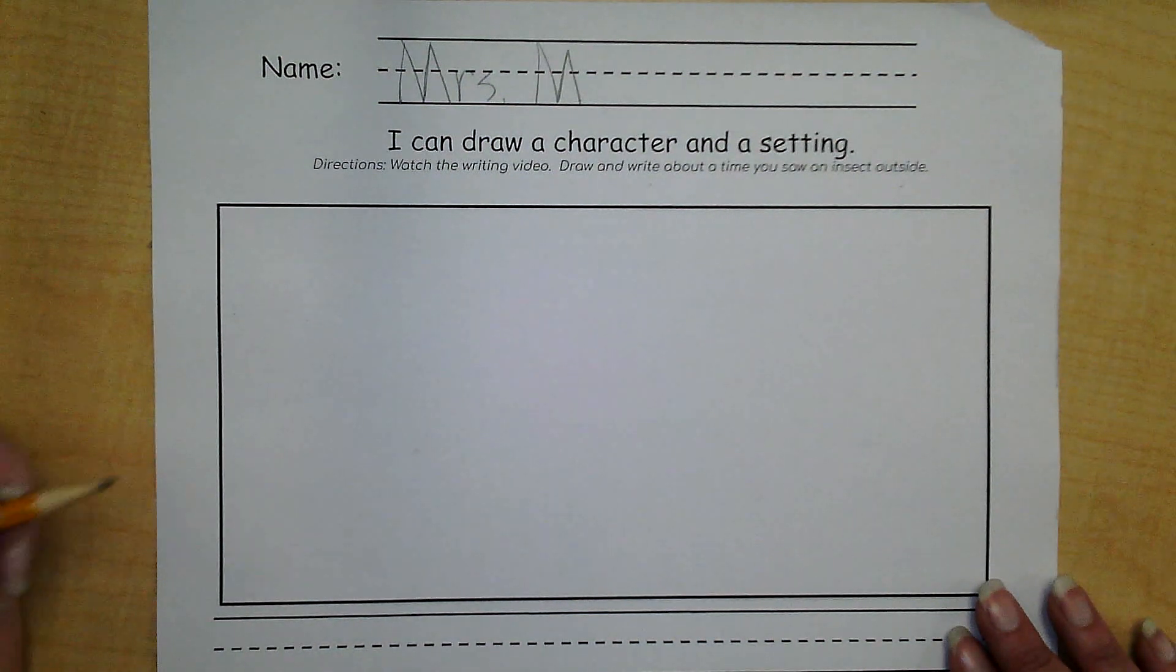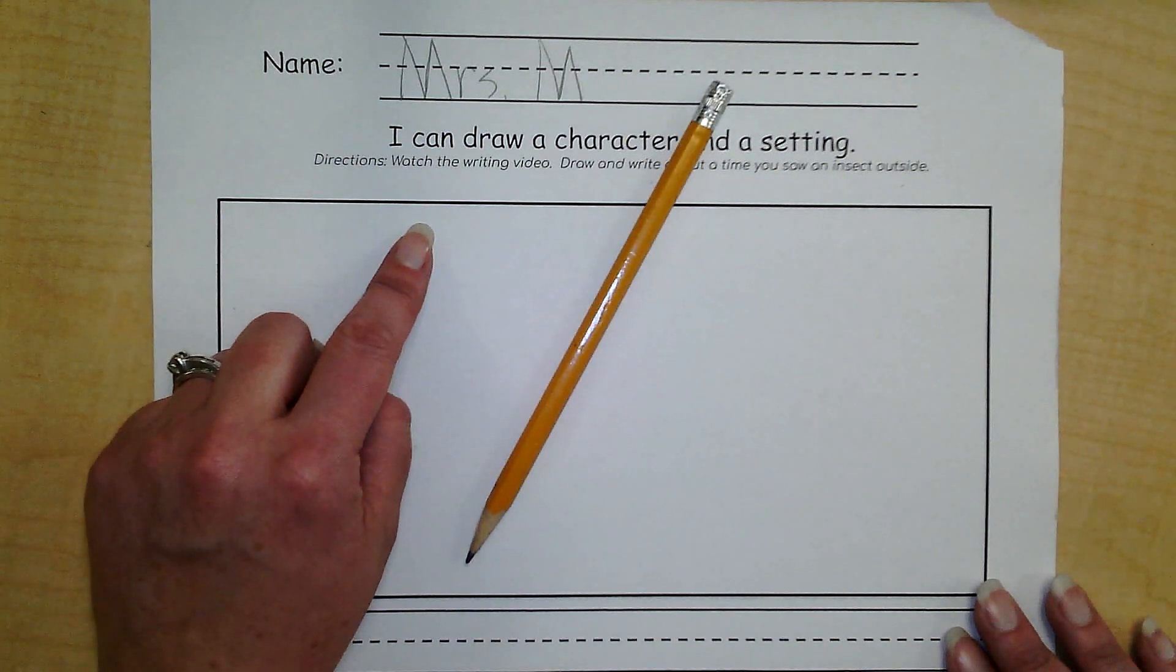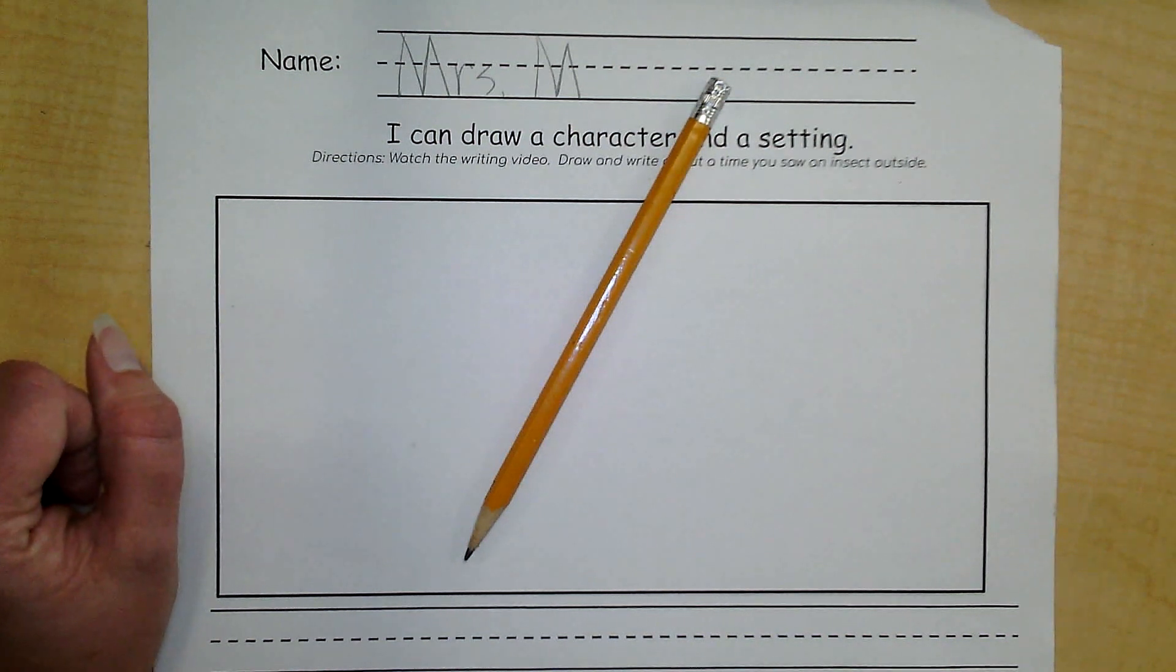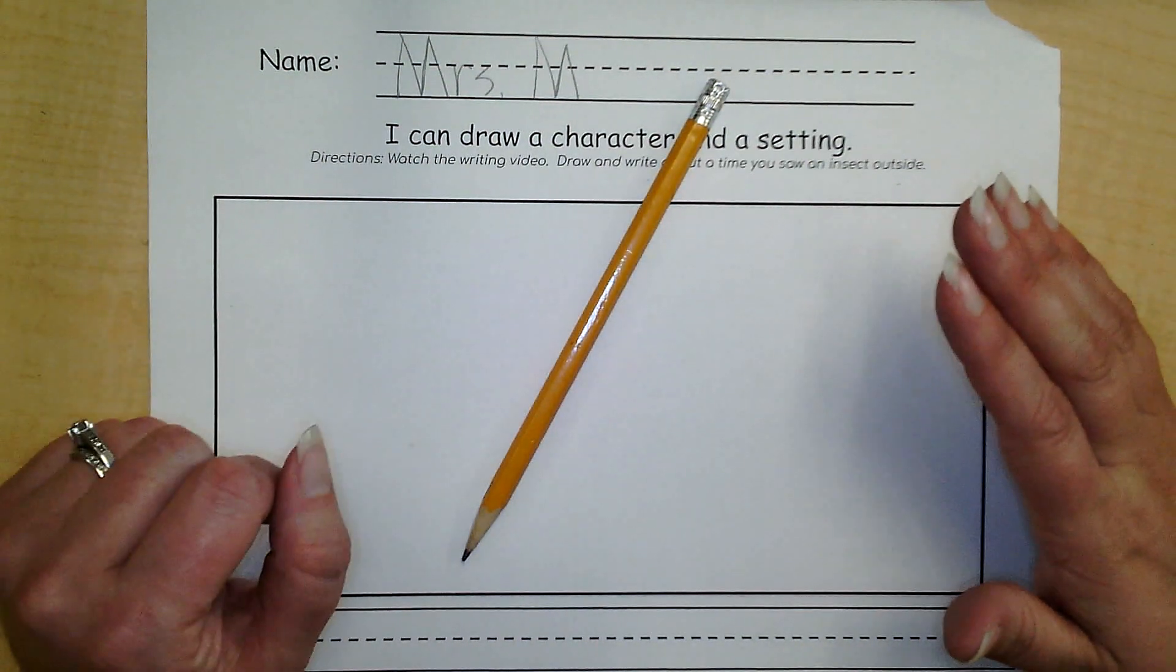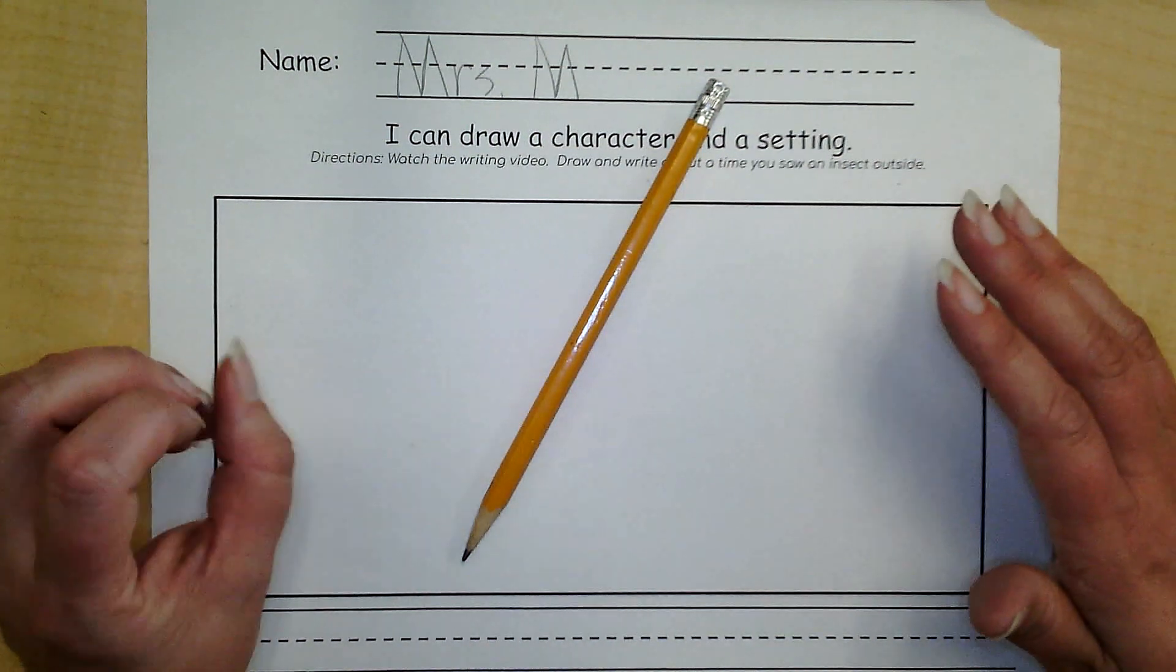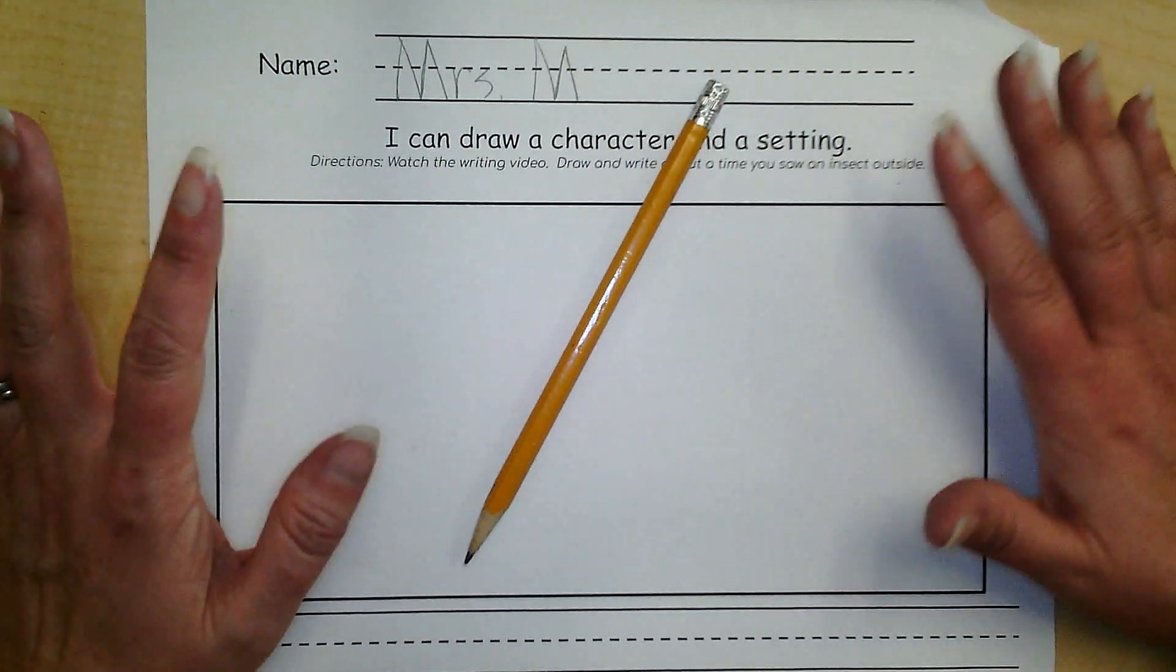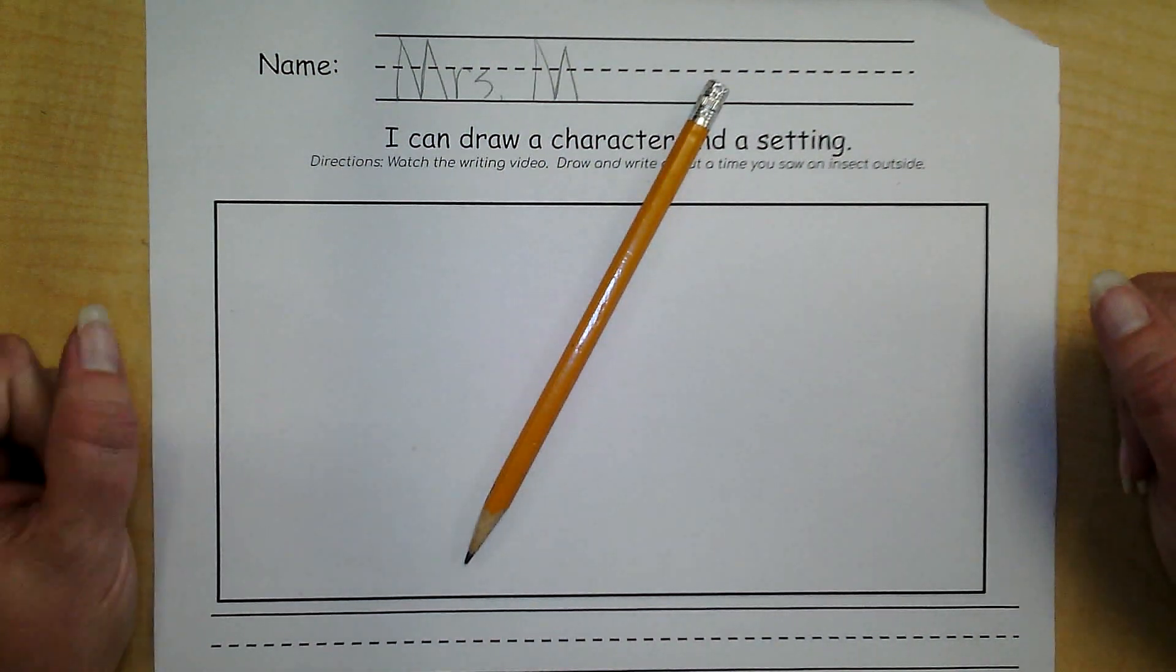Now I need to stop and think. I need to think about a time that I saw an insect outside. You know, one time I was at the park and I looked up and I was by a tree and I saw a bunch of ants climbing up the tree. It was crazy. I think that's what I'm going to draw and write about.